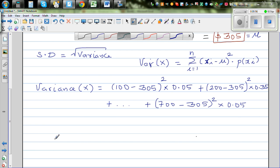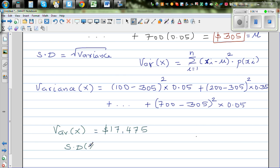If you find the variance, if you calculate the variance of x, it would be 17,475. So the variance is this number, and from this you can find the standard deviation. SD of x would be square root of 17,475.